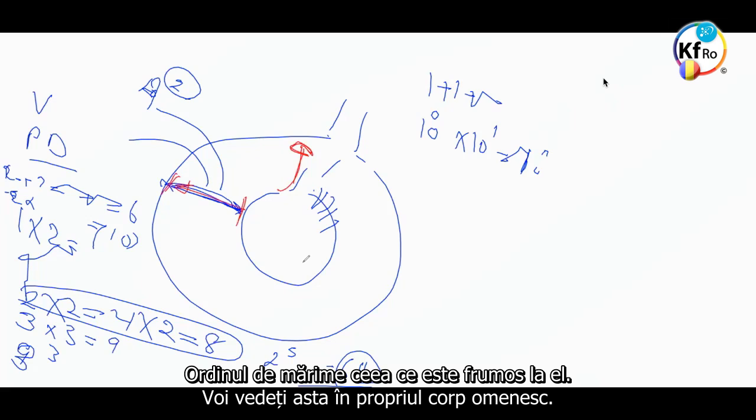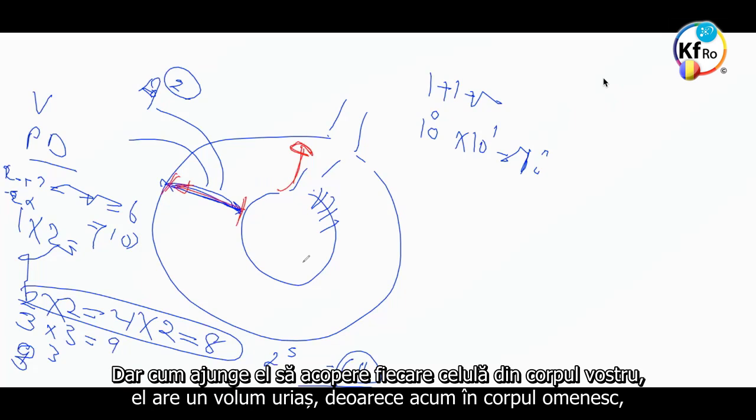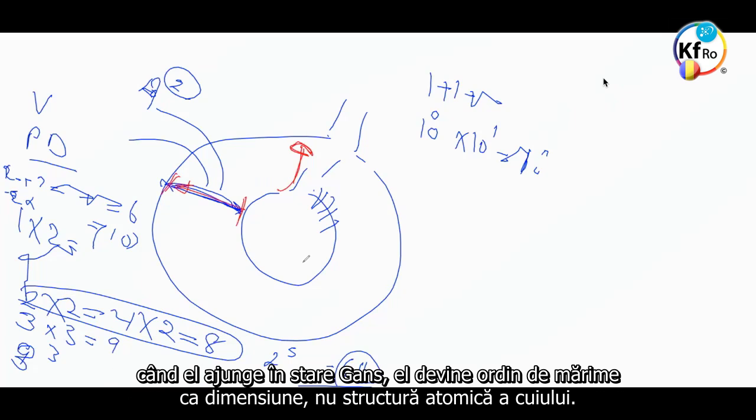You see this in your own human body. As I said in many teachings, you have an amount equal to one nail of iron in your body if you put it in Matter-State. But how come it covers every single blood cell in your body? It has a huge volume. Because in a human body, when it becomes in Gats' state, it becomes order of magnitude in size, not the atomic structure of the nail.